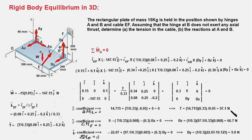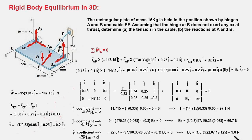From the j-coefficient equation, there are two unknowns: Bz and T. Substituting T = 97.1 N gives Bz = 66.7 N. From the k-coefficient equation, we can determine By = 9.8 N. So the three unknowns T, Bz, and By are found from the moment equations, and the remaining three unknowns will come from the force equation ΣF = 0.